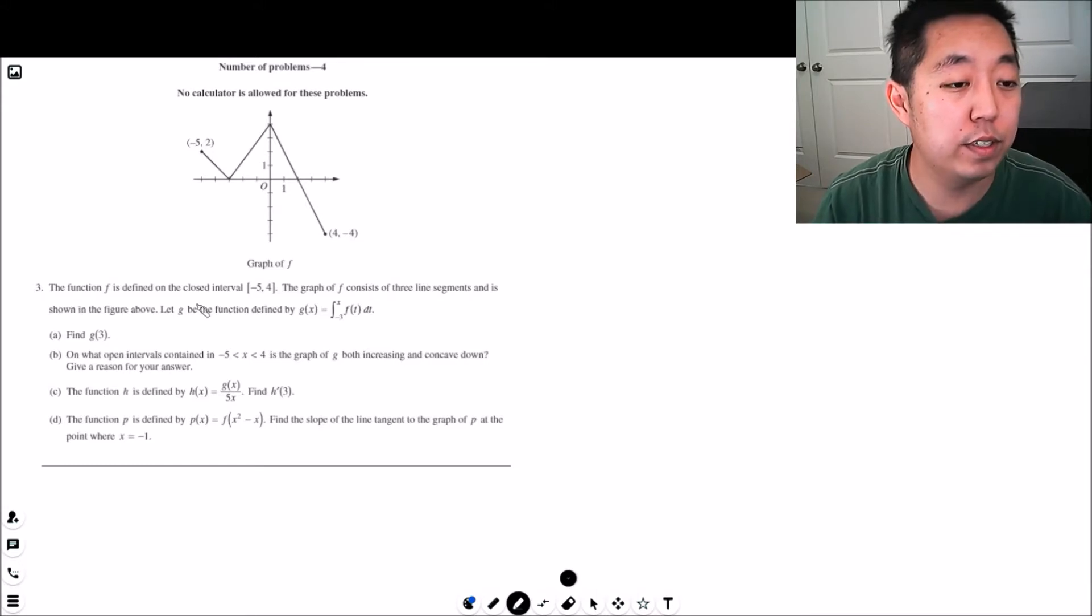The function f is defined on the closed interval negative five to four. This is the graph of f, consists of three line segments shown in the figure. Let g be the function defined by the integral from negative three to x of f of t dt. Find g of three.